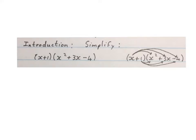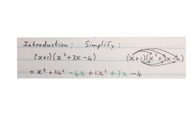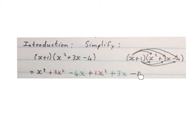Since grade 9 we've told you that if they ask you to simplify a binomial with a trinomial, you times this x with x squared, the x with 3x, and the x with minus 4. Then the plus 1 with x squared, the plus 1 with plus 3x, and the plus 1 with minus 4.